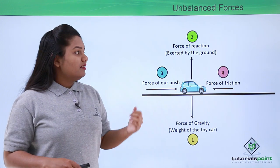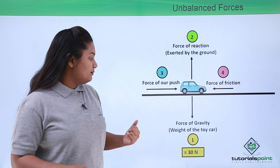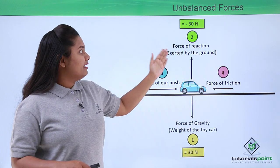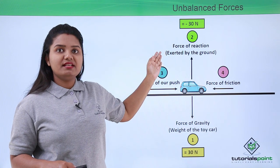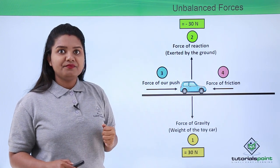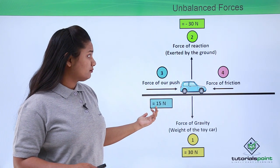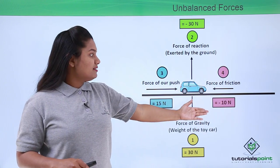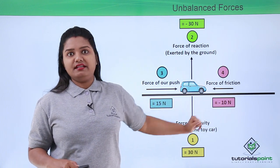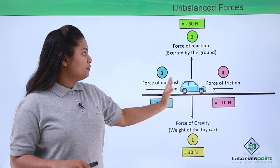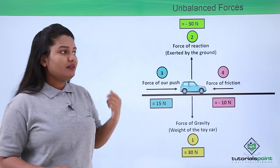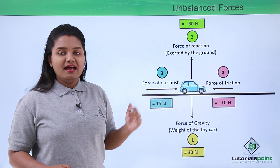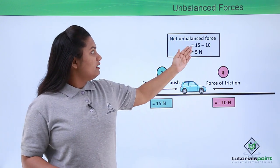When we push the toy car, the fourth force comes into play — the force of friction — which is equal and opposite to the force of our push. Let the force of gravity be 30 N and the force of reaction be minus 30 N. Suppose the force of our push is 15 N and the maximum force of friction is minus 10 N, since it acts opposite to the direction of push. The net force on the toy car is the addition of all four forces.